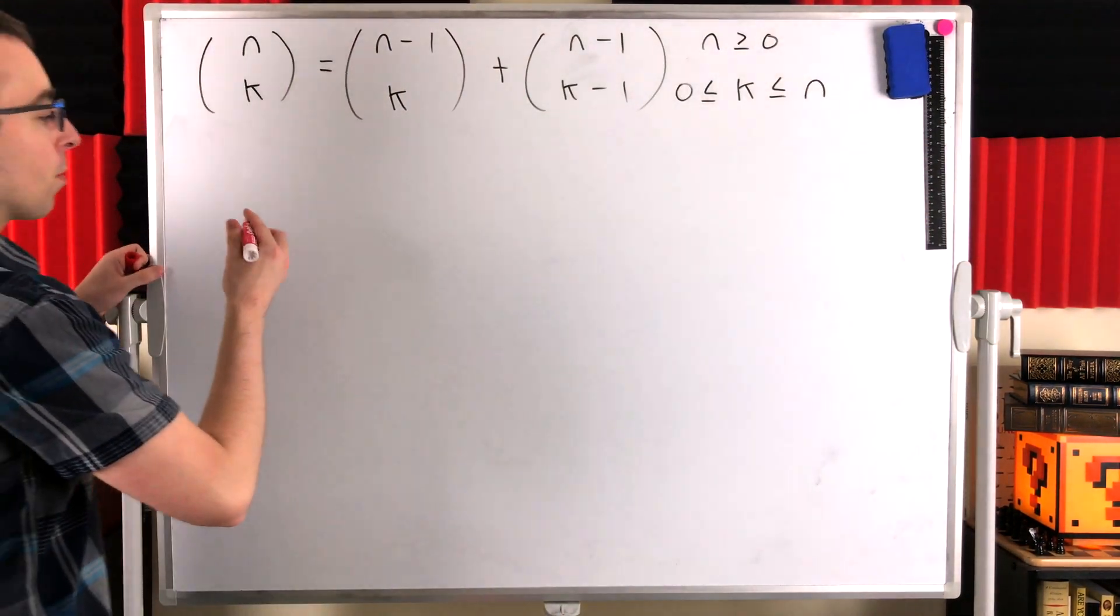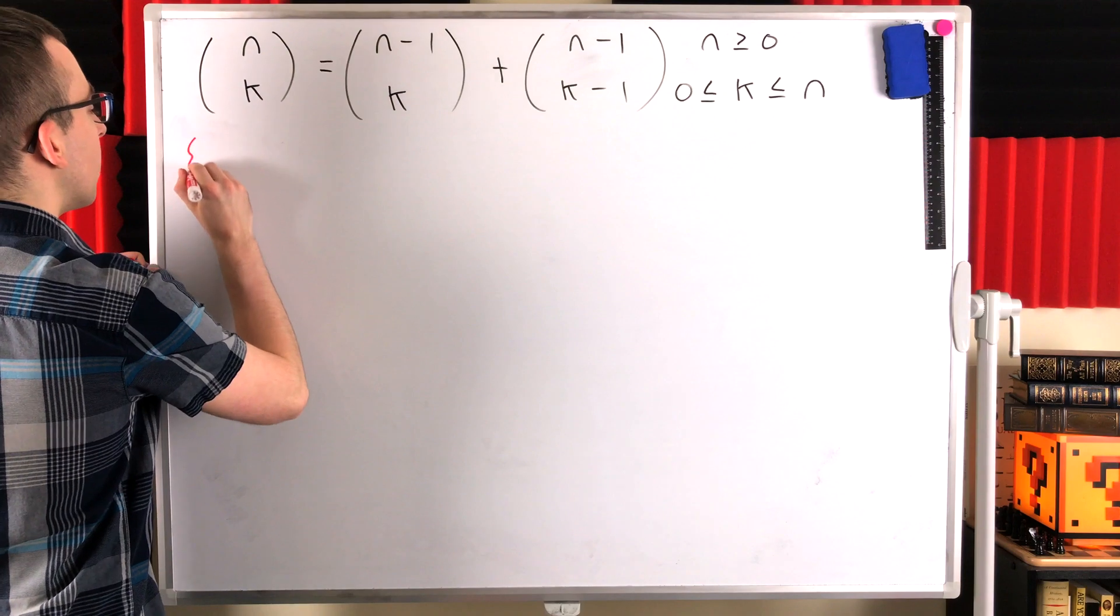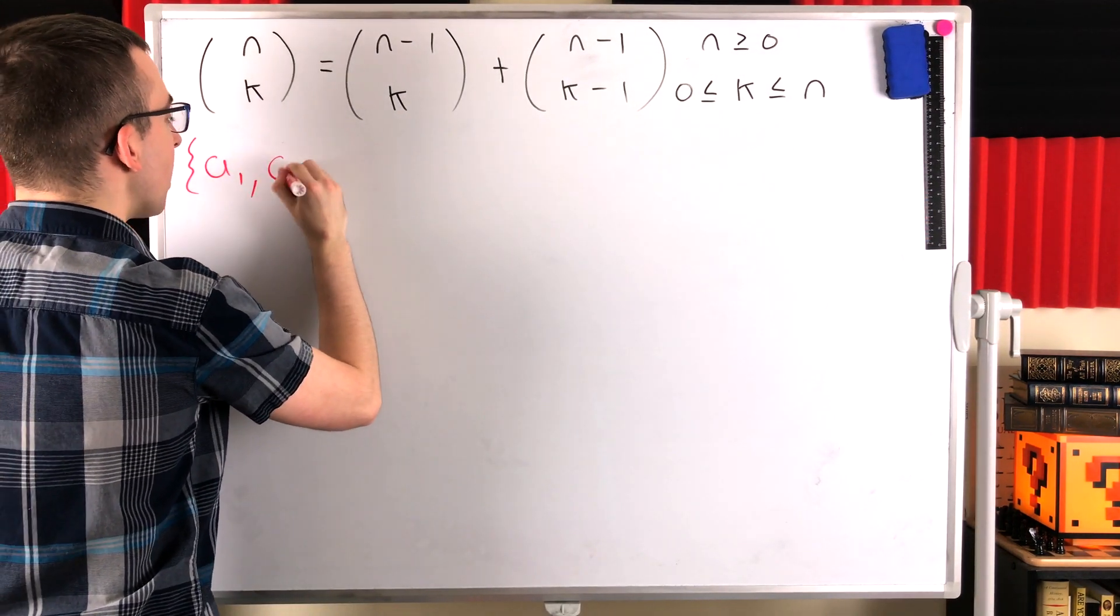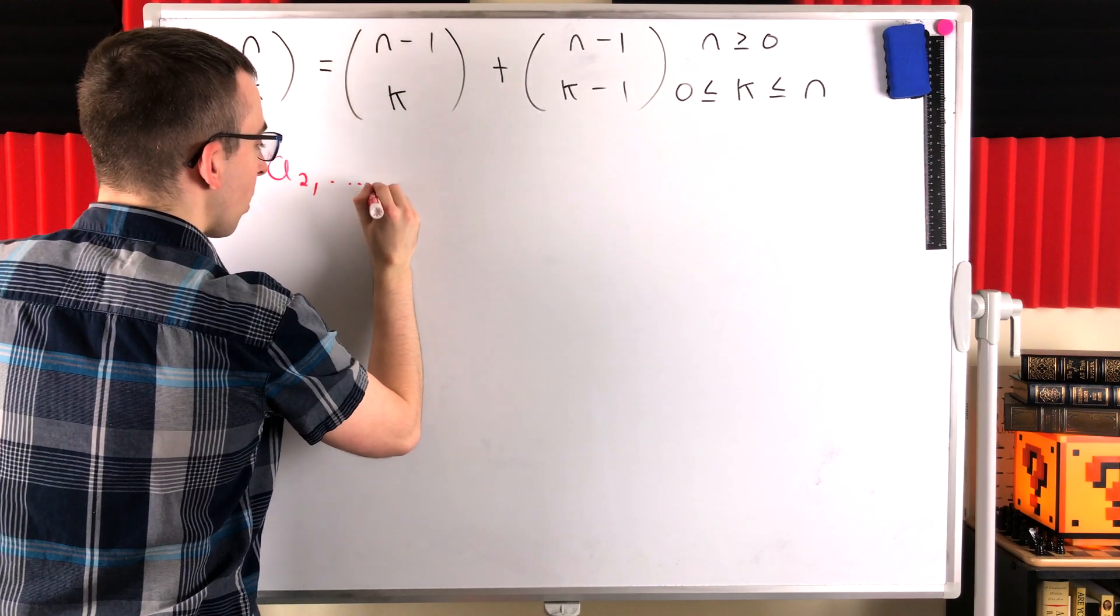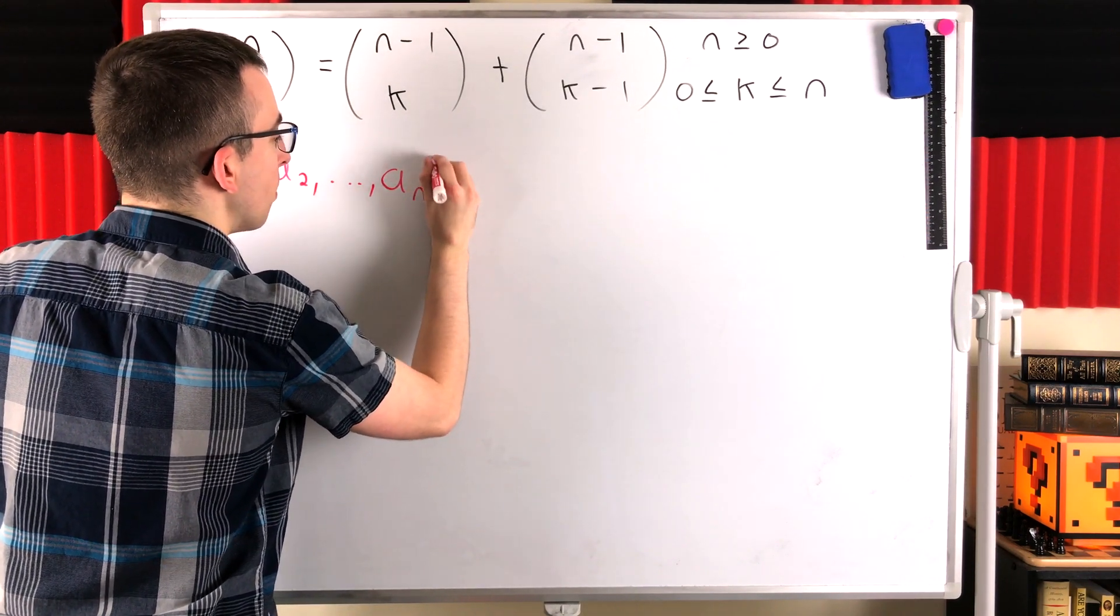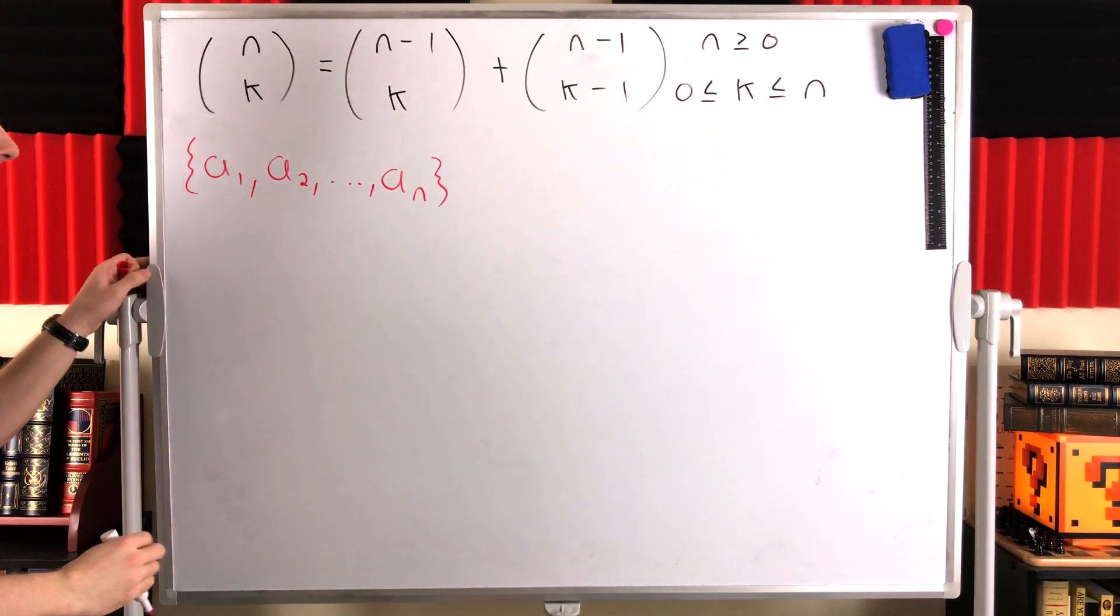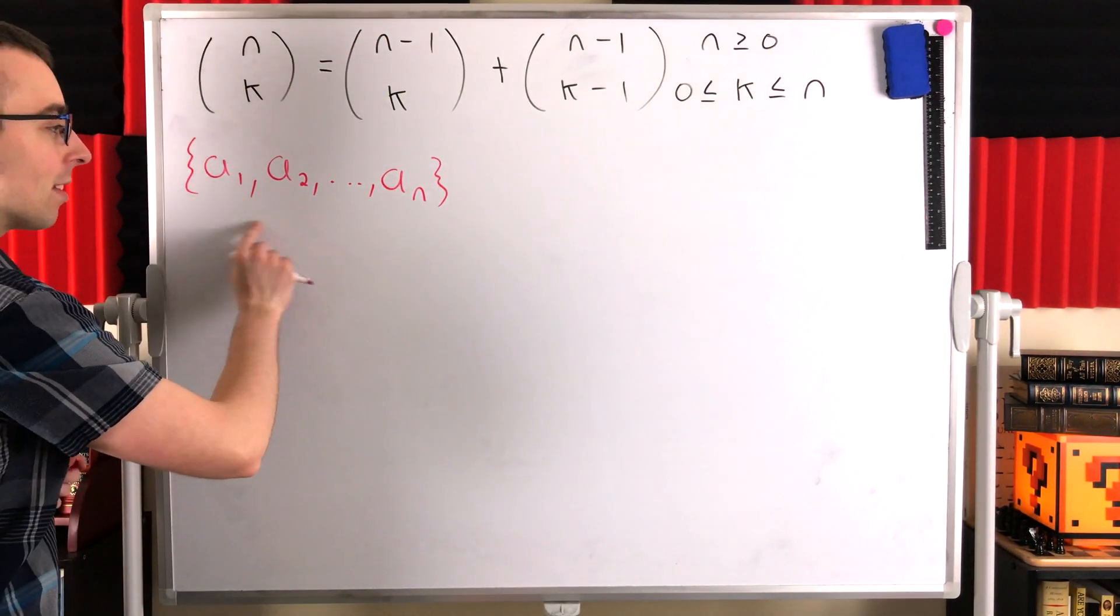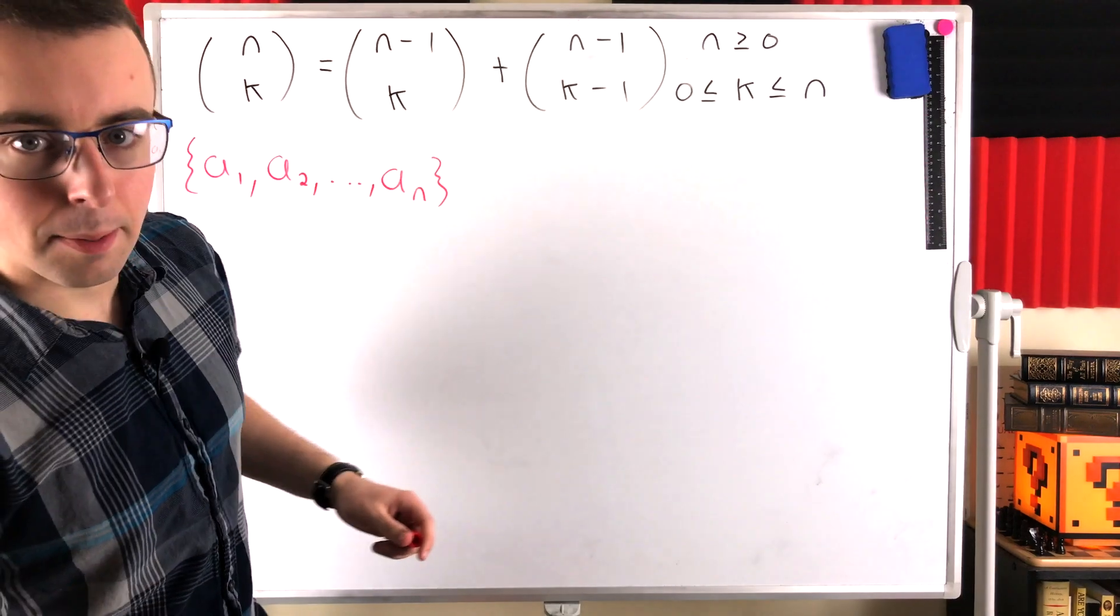So let's consider just a generic set of n objects. So, a1, a2, and so on up through some nth object, a_n. So we're considering the number of ways we can select k elements from this n element set.